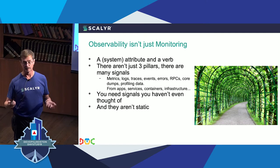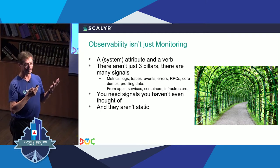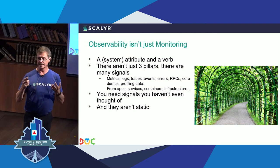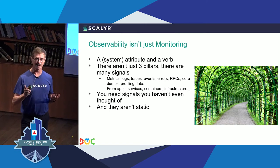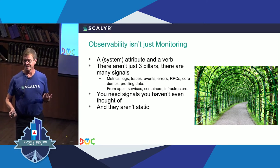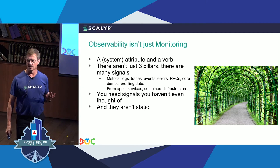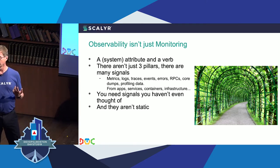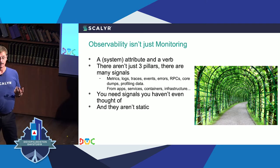We have a customer, believe it or not, who feeds their Twitter feed into it because their customers always know something is going wrong long before it ever goes wrong. They actually watch for customers to ask 'is something wrong?' and that triggers an alert — they go out and find what's happening. Signals are never static; they're constantly moving and changing.